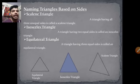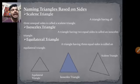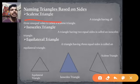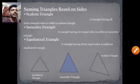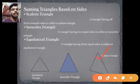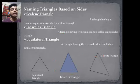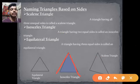Earlier we learned about angles. Now we are learning about triangles based on sides — the classification of triangles. First, we have the scalene triangle: a triangle having three unequal sides, where none of the sides are equal to each other. Next is the isosceles triangle: a triangle having two equal sides. Two sides are equal and the third side is unequal.